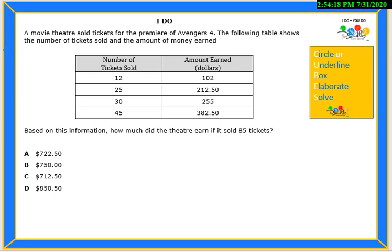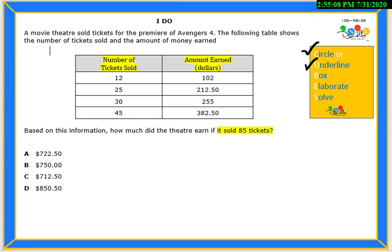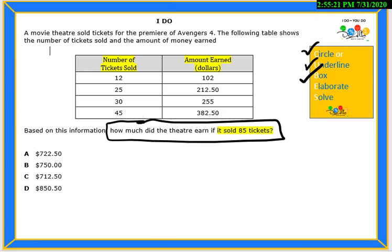On the right side of your screen you will see the CUBES strategy that we will be using today. We will start with circle or underline keywords — you can highlight: number of tickets sold, amount earned, and 85 tickets. Then we box our question: how much did the theater earn if it sold 85 tickets? Keep in mind the question is the focus to finding the answer.